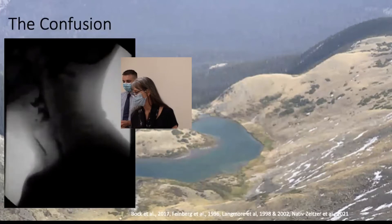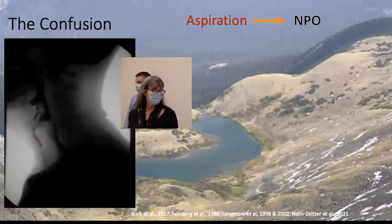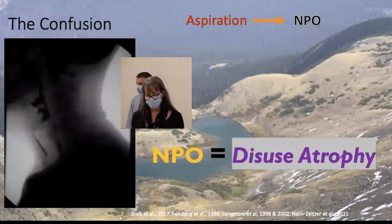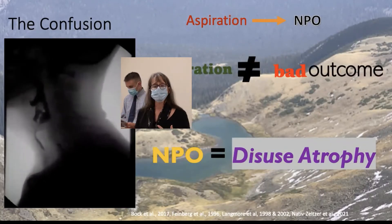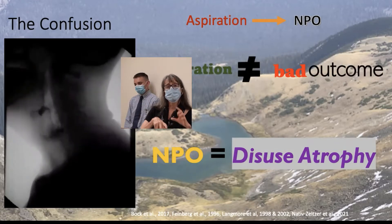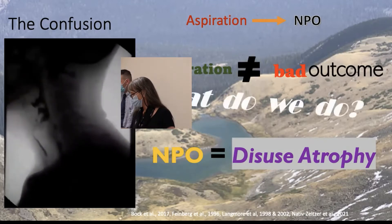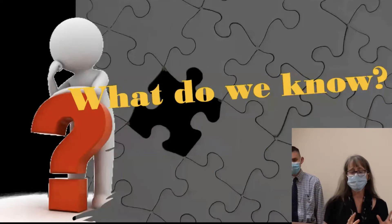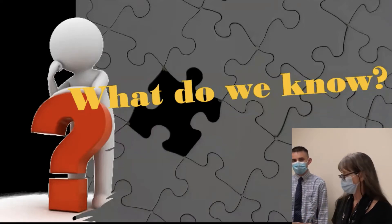The confusing part is you have patients who aspirate and you might think this person's aspirating, so I need to make them NPO. The downside is that when you make someone NPO, they're at risk for disuse atrophy, so you might actually make the swallow problem worse. And when aspiration occurs, it doesn't guarantee a bad outcome. So how do we differentiate those patients who aspirate and will be okay from those who will not? Often the missing piece in dysphagia management is linking the swallow disorder to what we already know about the individual host and what we know about lungs and how they behave when aspiration occurs.